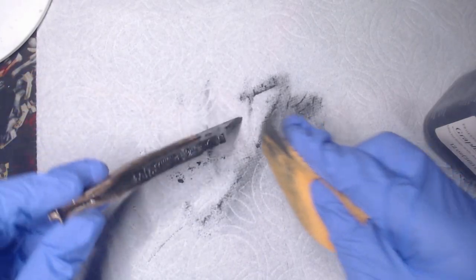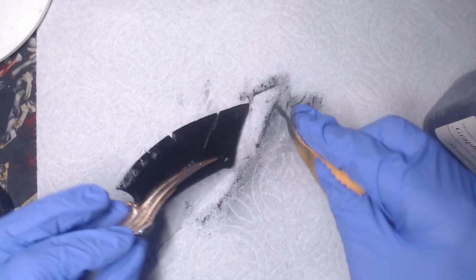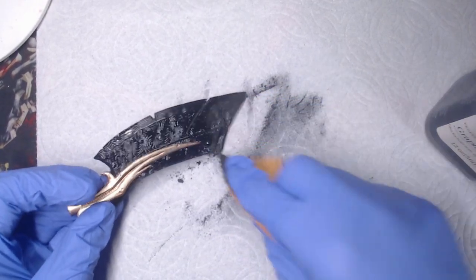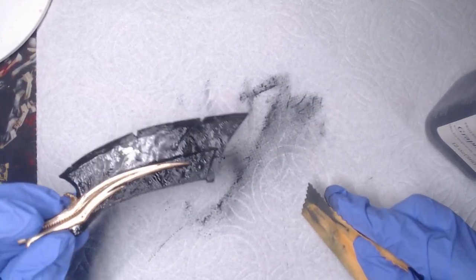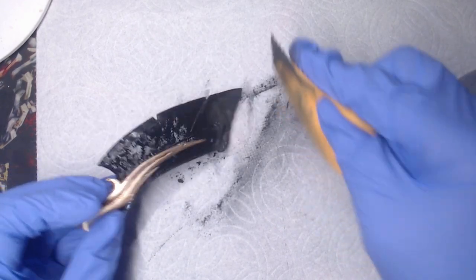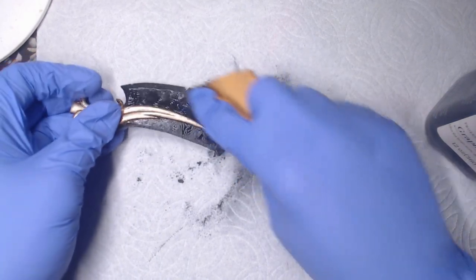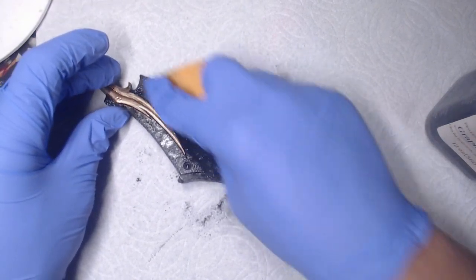For the blade itself, I rubbed graphite powder into the surface using a microfiber cloth. If you're going to work with graphite powder, please wear breathing protection as this is a very fine powder and you do not want to breathe it in. I opted to also wear gloves to help me keep from making a bigger mess.